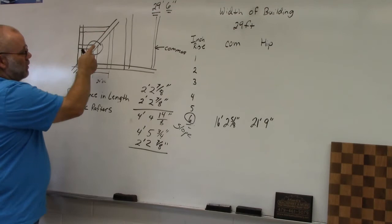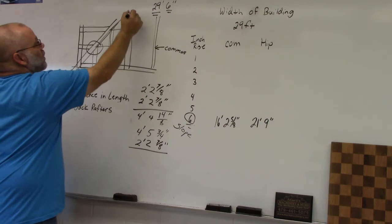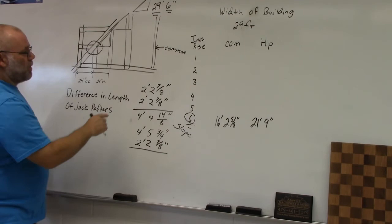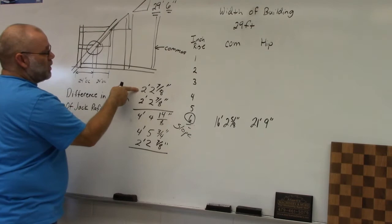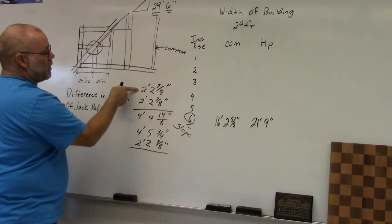This distance between jack rafters does not change — it stays the same all the way up. So to summarize: for the difference in length of jack rafters, you need the spacing and the slope, use the common difference, and just keep adding it to get the length of all your jack rafters.